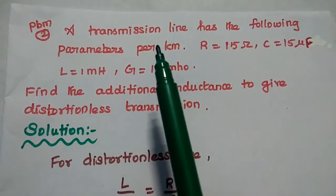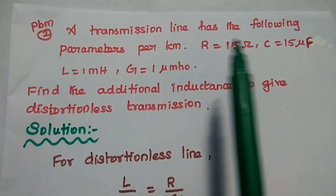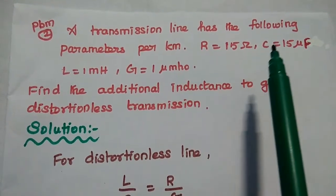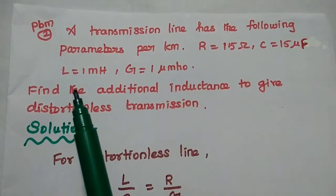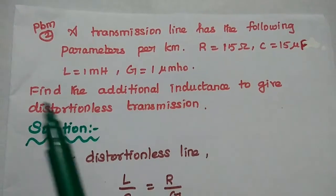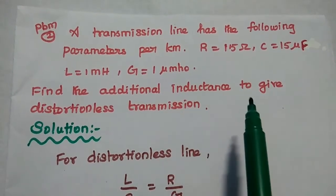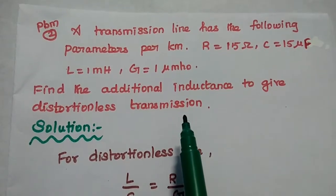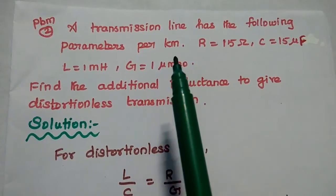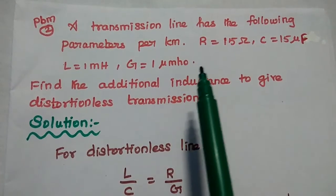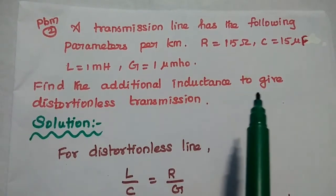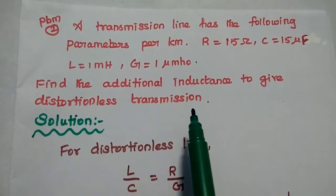This is the second problem. A transmission line has the following parameters per kilometer: R equal to 15 ohm, C equal to 15 microfarad, L equal to 1 millihenry, G equal to 1 micromho. Find the additional inductance required to give distortionless transmission. These are the parameters of a general transmission line with distortion, and we need to find the additional inductance for distortionless transmission.